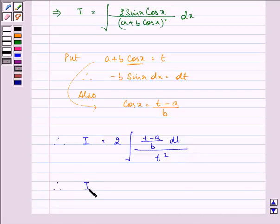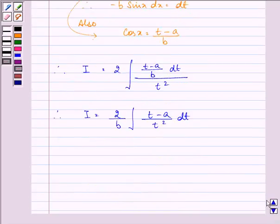So we have I is equal to 2 upon b integral t minus a upon t square dt. Which can be written as I is equal to 2 upon b, minus 2 upon b.